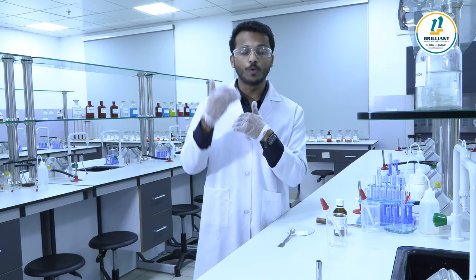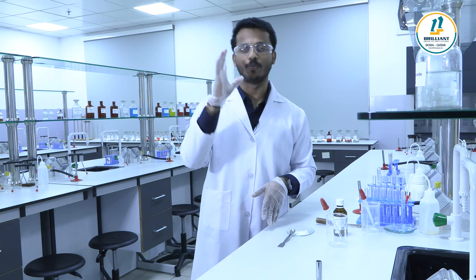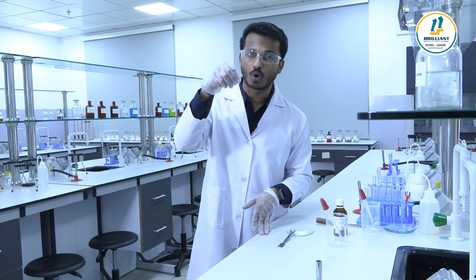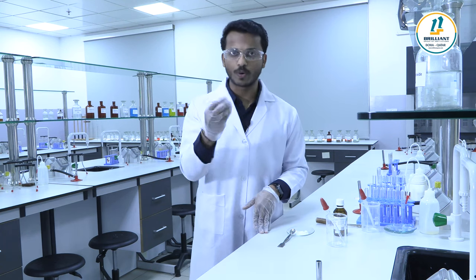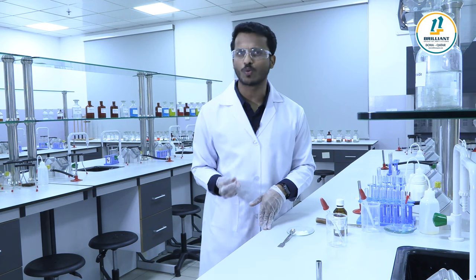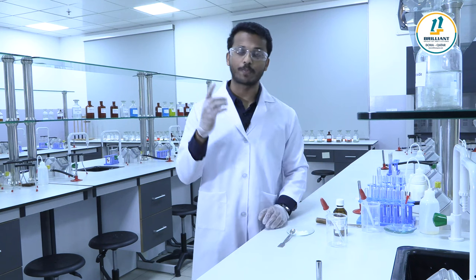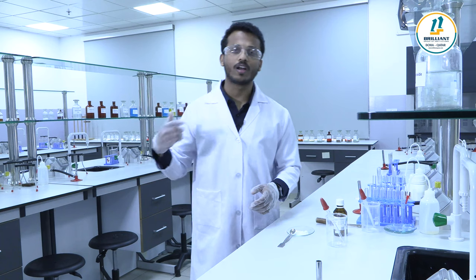Group three cation is aluminum, Al3+. To a little of salt solution, add solid ammonium chloride and excess ammonium hydroxide. You will get a white gelatinous precipitate — that is aluminum hydroxide — which indicates the presence of the group three cation, aluminum.